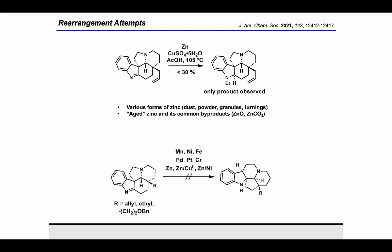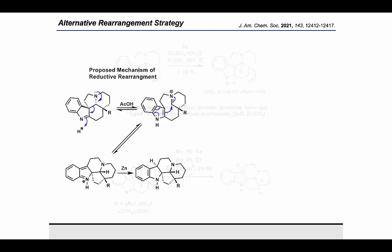We only observed the undesired 1,2-reduction of the imine. Hypothesizing that there might be trace metal contaminants in the reported zinc batch, we examined metals such as manganese, nickel, palladium, platinum, and chromium on the indolenium substrate. In all cases, the other metals were unable to affect the desired skeletal rearrangement. After extensive screens that spanned two years of a PhD, we decided to step back and re-examine the reaction mechanism.